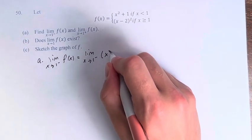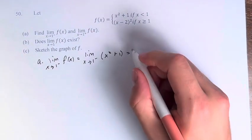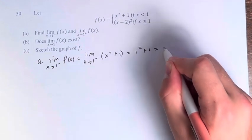So this is the limit as x approaches 1 from the left of x squared plus 1. There's no weird domain restrictions, so we can just plug in 1 directly. 1 squared plus 1 equals 2.